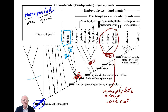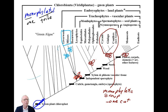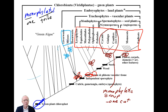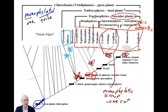We can find monophyletic groups at all kinds of levels in a tree. The group that we're going to be working with this semester — cut off here with our scissors — is called, in technical terms, the tracheophytes. Trachea means 'tube,' so it's the vascular plants. That is what we are studying this semester: the vascular plants, as a monophyletic group.